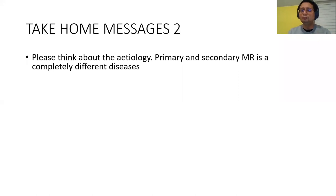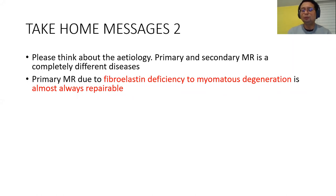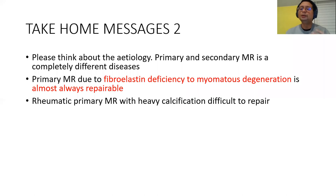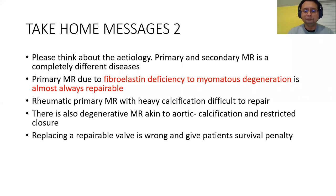Take-home message number two: always think about etiology — differentiate leaflet problem from annulus problem and from ventricle problem, because they are completely different diseases. We tend to be very aggressive with primary MR. Primary MR due to fibroelastic deficiency or myxomatous degeneration — flail or prolapse — is almost always repairable. We now know that surgeons can repair all kinds of prolapse and flail leaflets. Other types of primary MR such as calcification or rheumatic disease are very difficult to repair — replace if needed — but if you replace a repairable valve, that is wrong.